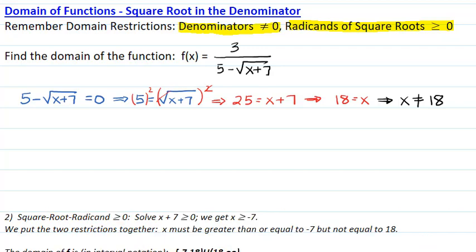Second, we must make sure that the square root radicand is greater than or equal to zero. This means x plus 7 greater than or equal to zero, or x greater than or equal to negative 7.